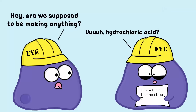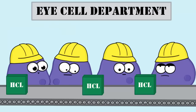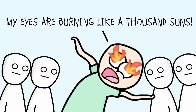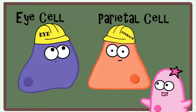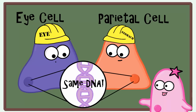Have you ever thought about what a disaster it would be if the cells in your eyes started producing the same hydrochloric acid that is made by your stomach cells? Your stomach cells produce hydrochloric acid to help break down food, but you definitely don't want that in your eyes. Thank goodness that doesn't happen. But it's surprising because both your eye cells and your stomach cells contain all of your DNA.